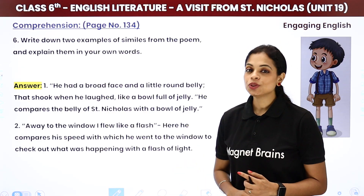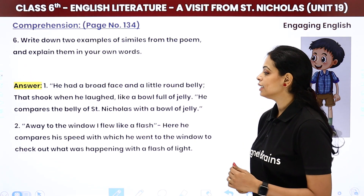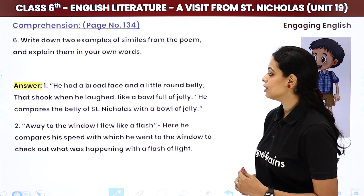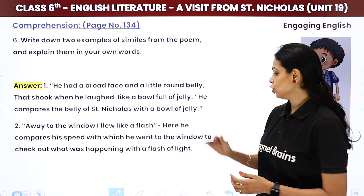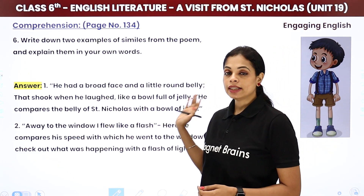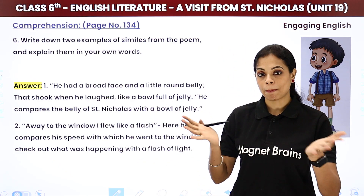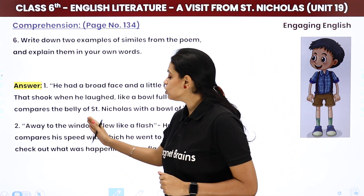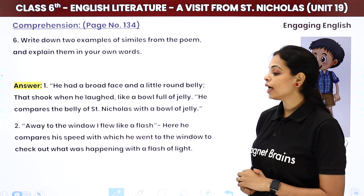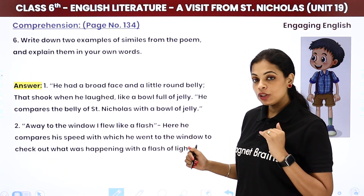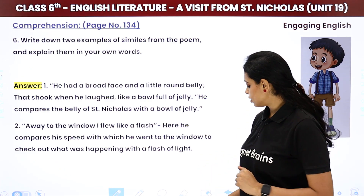Write down two examples of similes from the poem and explain them. First: 'He had a broad face and a little round belly that shook when he laughed like a bowl full of jelly' — here the narrator compares Saint Nicholas's belly to a bowl of jelly. Second: 'Away to the window I flew like a flash' — here the narrator compares his own speed rushing to the window to a flash of light.